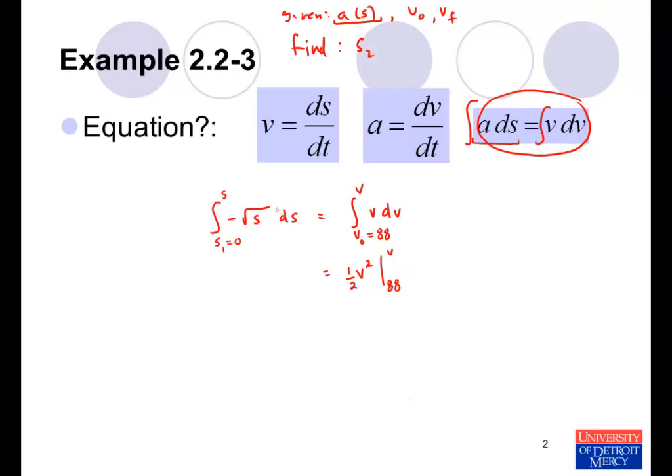We evaluate it between the limits of 88 and V. On the right-hand side, we can think of the square root as S to the one-half power. We add 1 to the exponent, S to the three-halves power. We then divide through by two-thirds. We still have that negative sign. So that's the antiderivative, and we evaluate it between 0 and S. We then plug in. We substitute the upper limit, so we have minus two-thirds S to the three-halves. And then we subtract this evaluated at 0 at the lower limit. Evaluated at 0, that's just equal to 0. On the right-hand side, we substitute the upper limit for V, which is just V, and then we subtract that expression evaluated at the lower limit, 88.